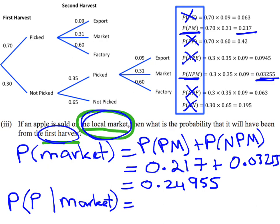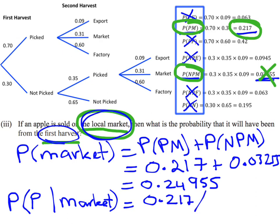From our two possibilities - PM and NPM - which meets the criteria of being picked in the first harvest? Only the top one: the 0.217 that was picked the first harvest and then sent to market. The other does not meet the criteria - it was picked on the second harvest, not the first. So my conditional probability is 0.217 over the probability of going to market, which is 0.24955, and that gives a value of 0.8696 rounded to four decimal places.